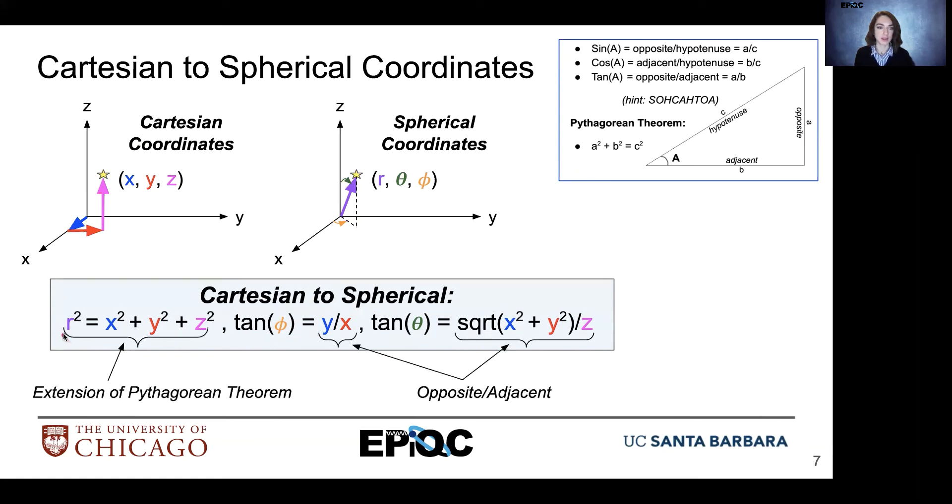So here we have r that's formed as an extension of the Pythagorean theorem. And then we can see that to generate phi and to generate theta, we're simply using the tangent relationships of opposite over adjacent.